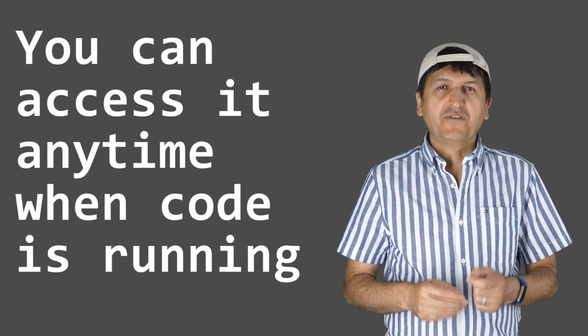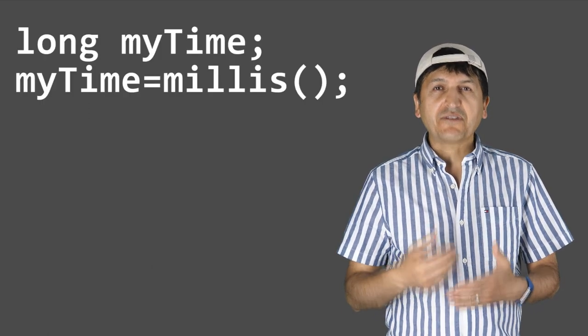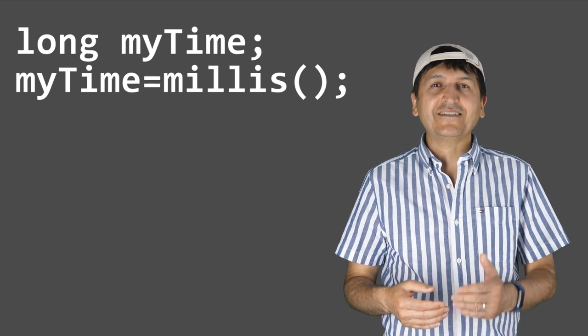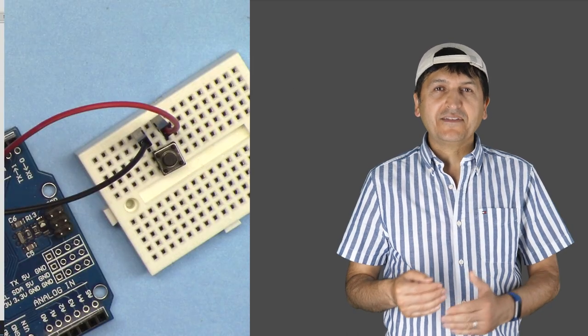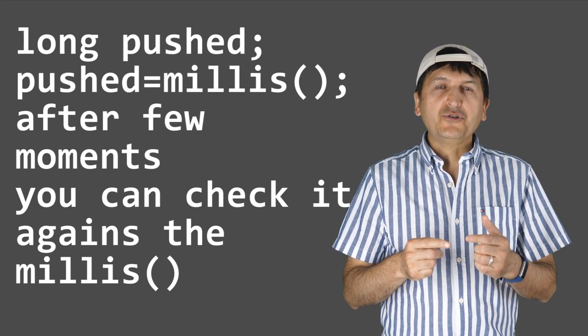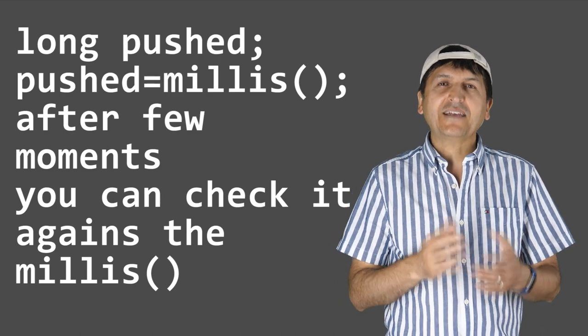Millis can be accessed throughout the code at any point. For example, you can record a start point and then a stop point. At any moment — for example, when somebody presses a push button, temperature increases, or something is detected — you can say 'I'm counting from this point until some other event happens.' From the time the push button is pressed, you can save the millis value in a variable and check it continuously until five seconds have passed, then take an action.